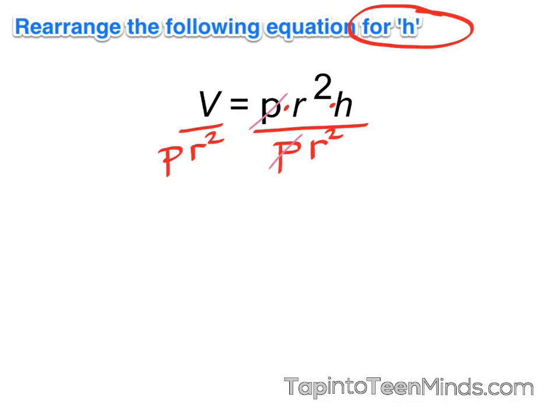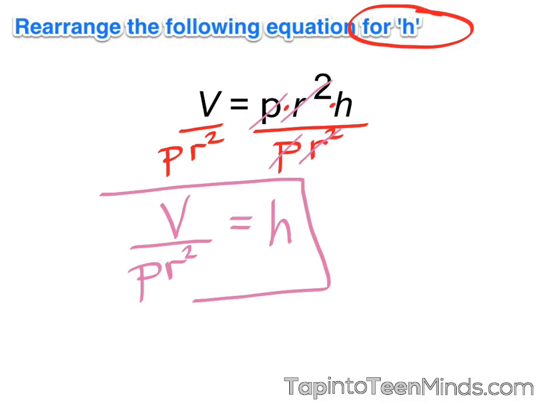Since p divided by p is 1, and r squared divided by r squared is 1, we are left with h isolated equals v over p times r squared. And our first formula has been rearranged for the variable h.